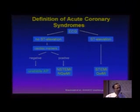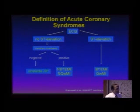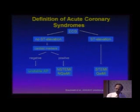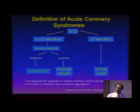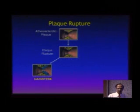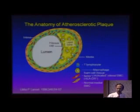If you have no ST elevation and the cardiac markers are negative, it is called unstable angina. If you have no ST elevation but cardiac markers are positive, it is called non-ST elevation myocardial infarction or NSTEMI — a standard term, now well established in literature. ST elevation MI is far more dangerous and far worse to handle in the perioperative period than a non-ST elevation MI. When plaque rupture occurs, a non-occlusive thrombus leads to non-ST elevation MI; if it is an occlusive thrombus, you have ST elevation MI.